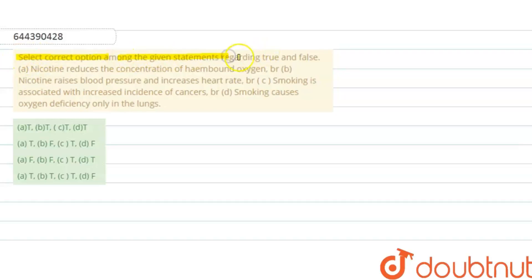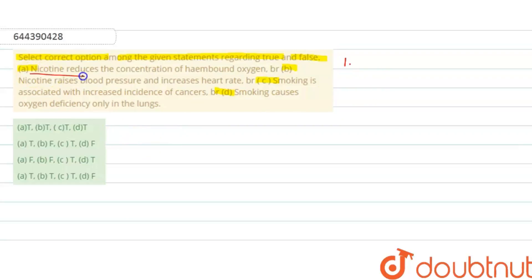The question asks us to select the correct option among the given statements regarding true and false. We have four statements A, B, C and D, and we have to determine which is true and which is false. Let's discuss all the statements one by one. Statement A: nicotine reduces the concentration of heme-bound oxygen — this is true.